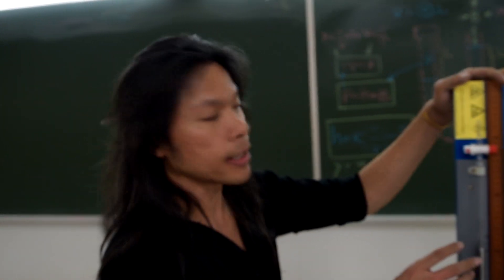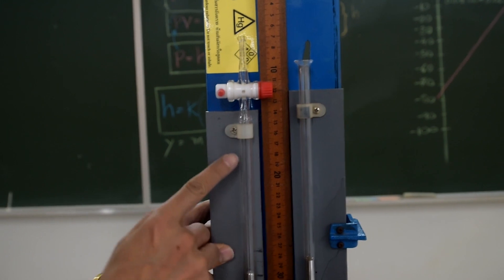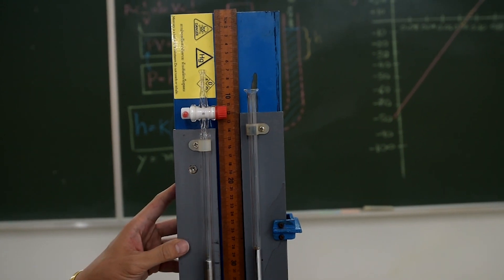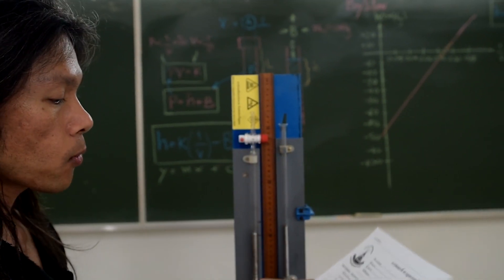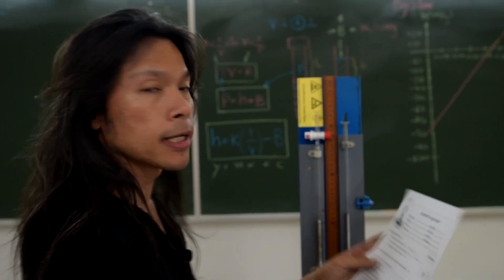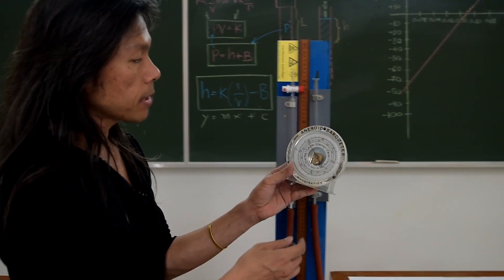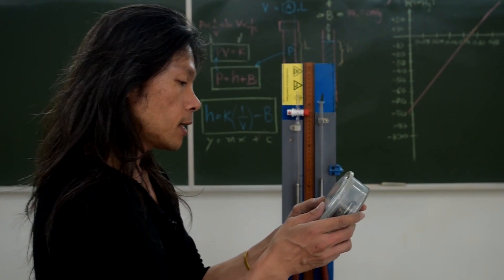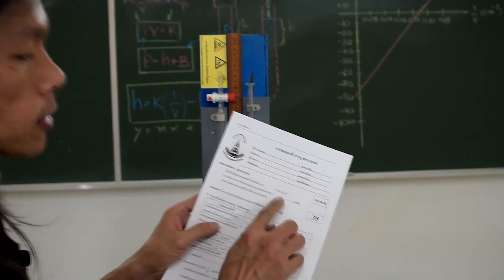Experimental part: this is the Boyle's law experimental setup, consisting of two glass tubes on the left and right sides. The left tube is the close-ended tube and the right tube is the open-ended tube. We will record experimental data into the report sheet. The first value to record is atmospheric pressure in units of centimeters of mercury — this is B — measured from the barometer. For example, today the atmospheric pressure is 74.0 centimeters of mercury, which we record in the report sheet.